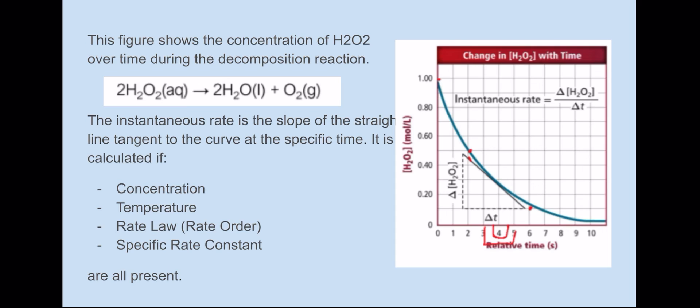And the instantaneous rate is the slope of the straight line tangent to the curve at the specific time. You can see the curve which shows that the concentration is decreasing. When you put a straight line against this curve, you have a tangent to the curve. The slope of this tangent is called the instantaneous rate, and it is calculated if you have the concentration, temperature, rate law or order, and the specific rate constant.